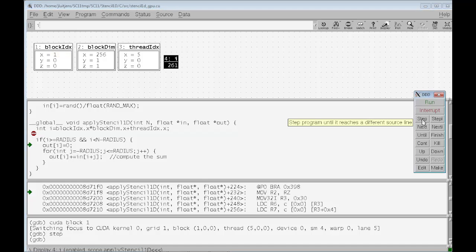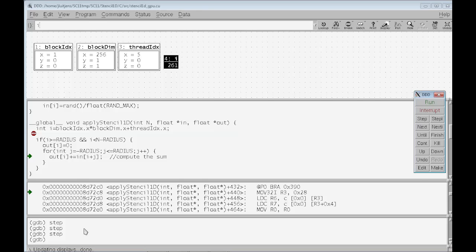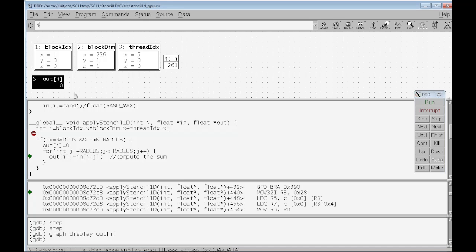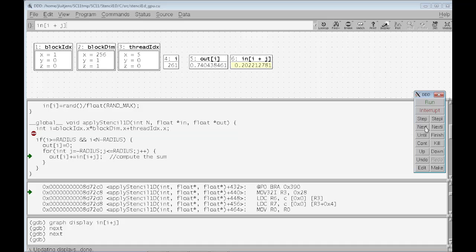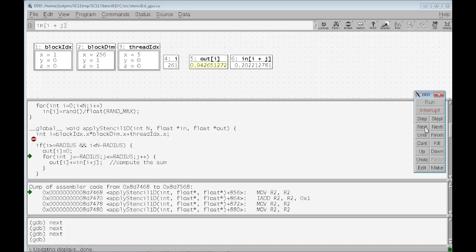Now I can step through this code. I can inspect variables. So here I'm going to type in the display, so I'm going to do graph display out bracket i. So I've got a unique index. Depending on the index I'm on, this variable is going to change. And I'm going to do the same thing for in bracket i plus j. So this shows me the value of the input array and the output array that I'm currently accessing. And so as I step through this, I can see that the output array just changed, and that's why it's highlighted. And now the input array has changed because j was incremented. And as we go through, you can see that the debugger is fully functional. If I'm interested, I can look at the machine code here, and I can see our machine code. And so here we have a fully functional debugger.